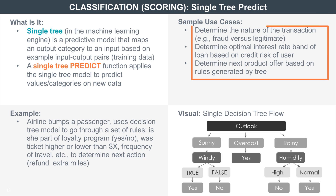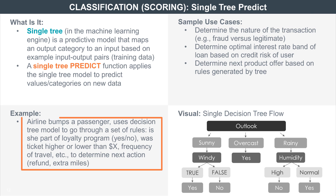Some use cases of single tree PREDICT include determining if a new bank transaction is fraudulent based on known attributes of other fraudulent transactions, or what to offer a customer who has been bumped from a flight based on her flying history.